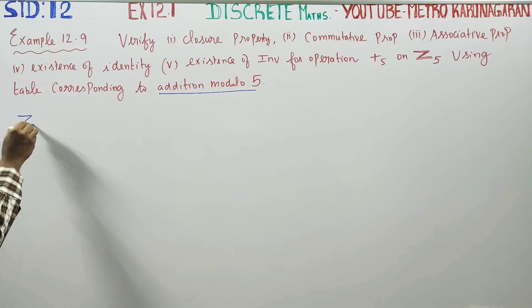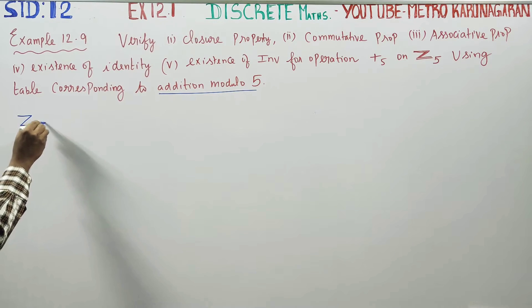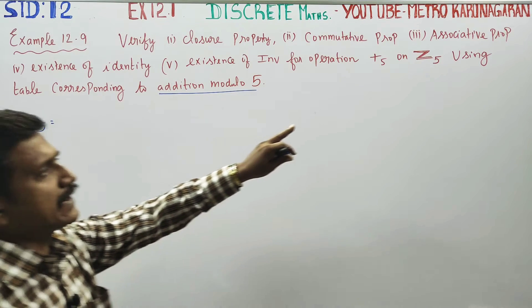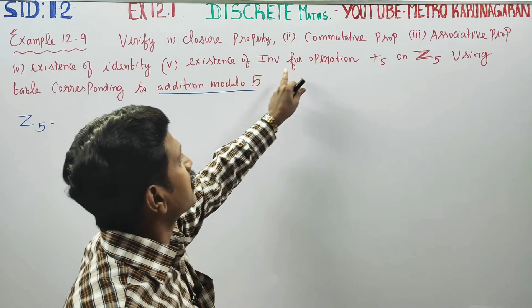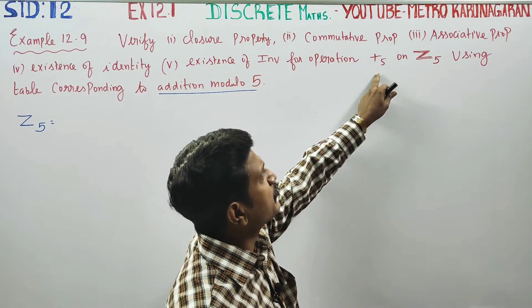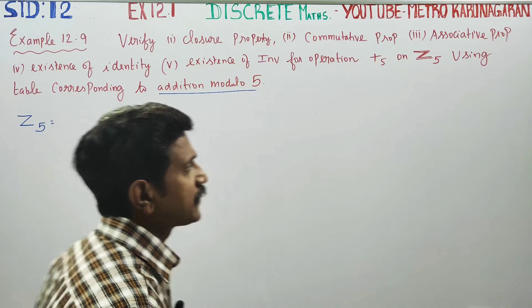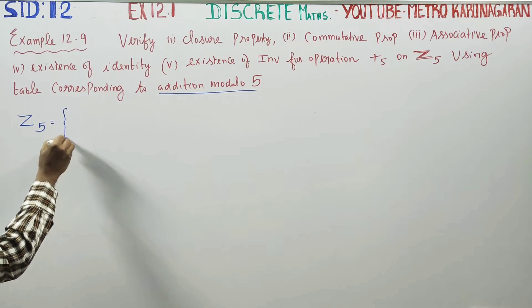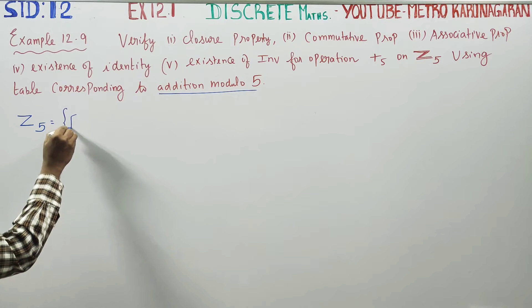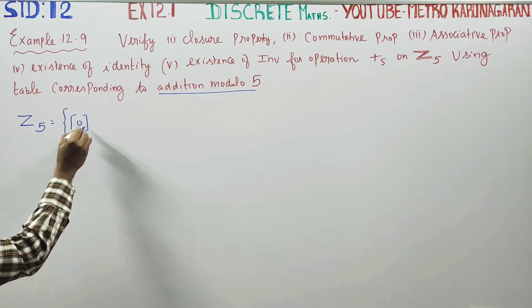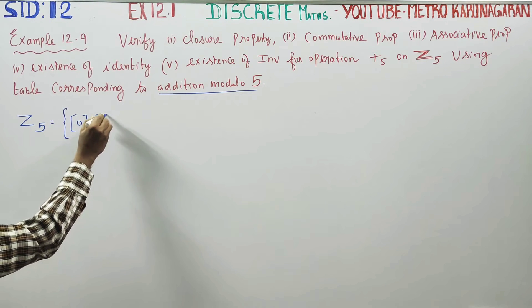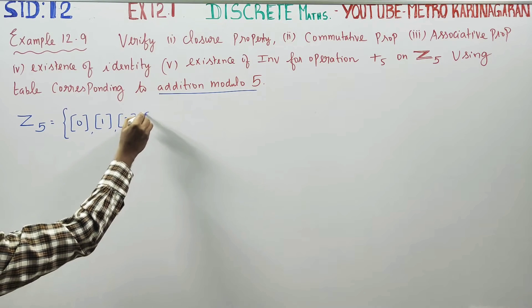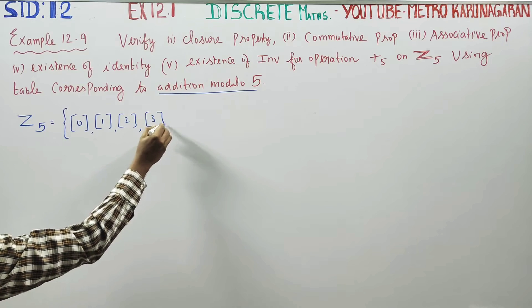Z₅ with respect to addition modulo 5 has the following elements: 0, 1, 2, 3, and 4. These are the elements of Z₅.